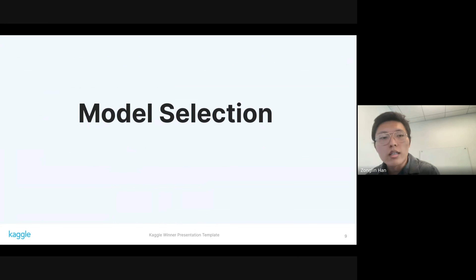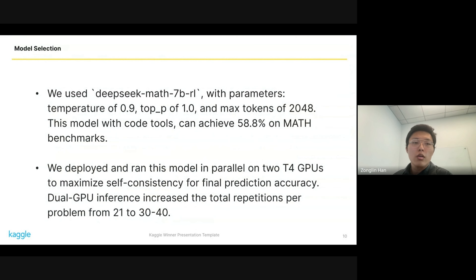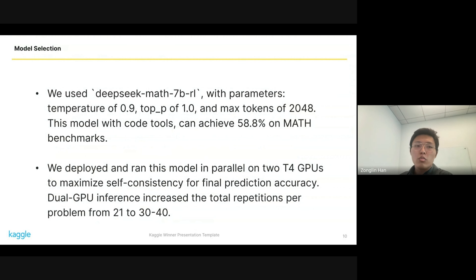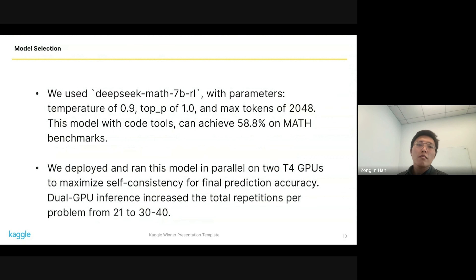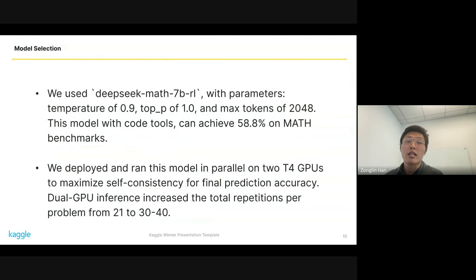Let's dive deeper into model selection. As mentioned, we used DeepSeek Math 7B, which is a model tuned specifically to solve mathematical problems. For randomness parameters, we used the default temperature and top-k settings. We allow a maximum of 2048 tokens, though later we'll see that even with a large limit, other constraints prevent the model from ever using that much. This model had a pretty decent performance on the MATH benchmark, a public benchmark for mathematical problem-solving, which is why we started with it.